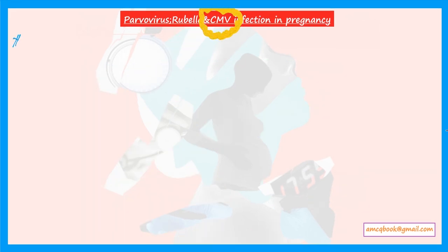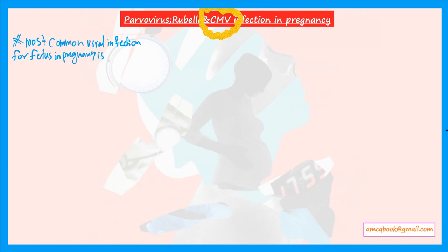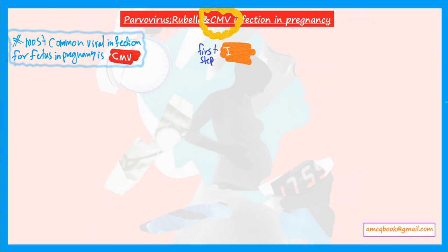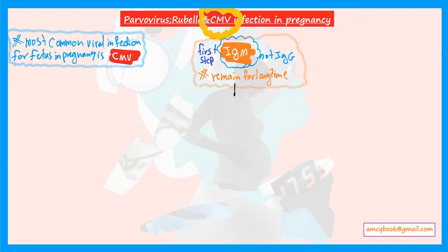Now let's discuss cytomegalovirus (CMV) infection prevention in pregnancy. CMV is the most common viral infection affecting the fetus in pregnancy, making it very important. For a pregnant woman who has been in contact with a CMV-infected child, the first step is IgM — not IgG — because IgM forms in acute infection and remains for a long time, helping identify whether the woman is currently infected or was infected previously.